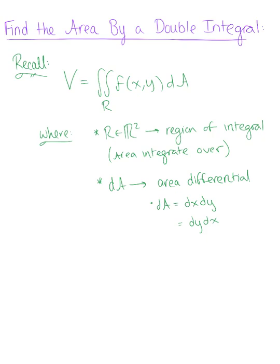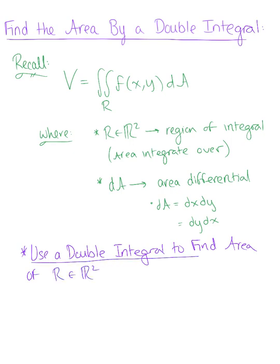So if we're asked to use a double integral to find the area of this two-dimensional region R, all we need to do is let the height vary to one. So the area of our region R is equal to the double integral over R, and we let our function be one dA.